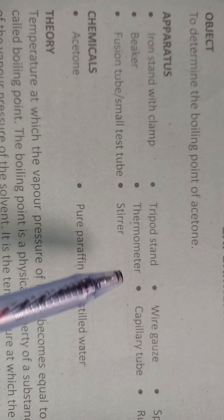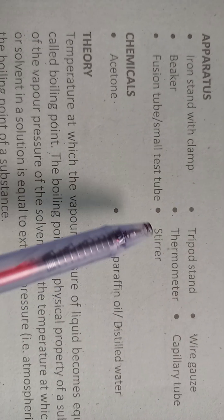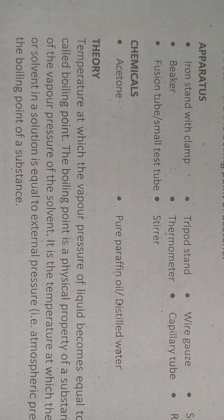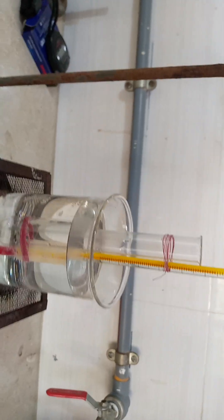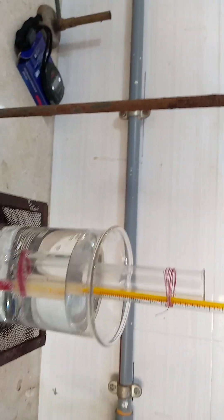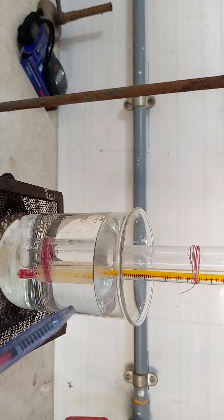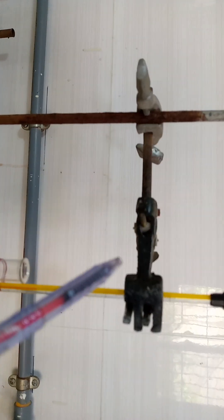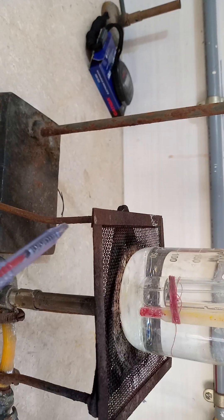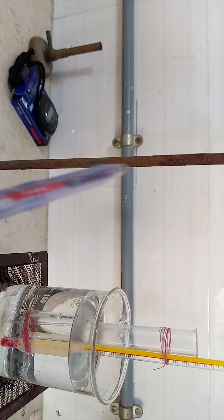We have all the apparatus in our laboratory. The chemicals we shall use are acetone and water. For this purpose we have arranged all the apparatus: one beaker, one thermometer, one test tube, wire gauze, tripod stand, iron stand, and a Bunsen burner.